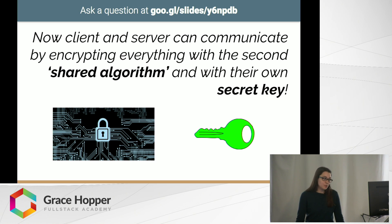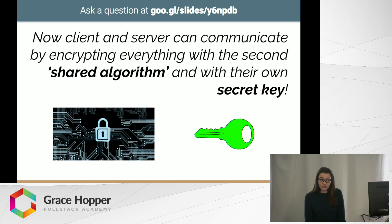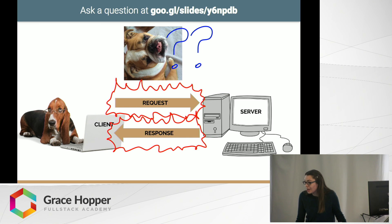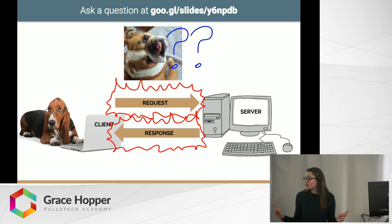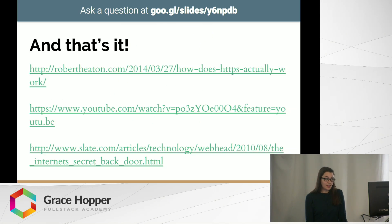Now the client and server can continue to communicate by encrypting everything with the second of the shared algorithms and the secret key they agreed upon that the client sent over to the server. Hopefully you now understand what's going on in this diagram — the client and server are sending encrypted requests and responses using SSL, which is the shared algorithm and secret key they decided upon, and the boxer dog is not able to know what they're saying. That's it — that's all that HTTPS is, for the most part.